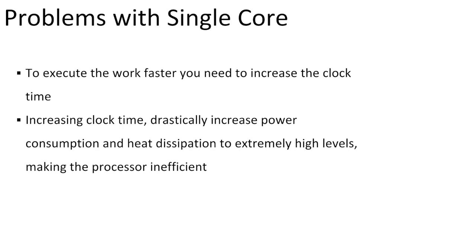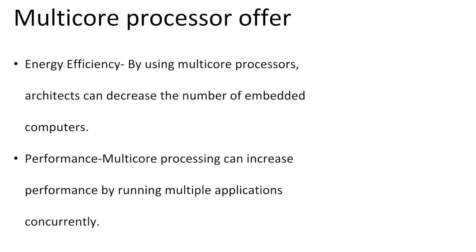Some problems with single-core processors: most programs today need dual-core processors to run efficiently. To execute work faster you need to increase clock speed, but increasing clock speed drastically raises power consumption and heat dissipation to extremely high levels, making the processor inefficient.